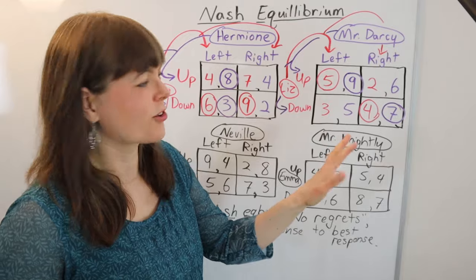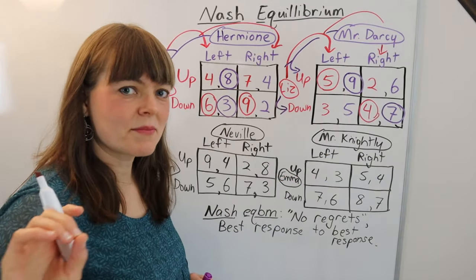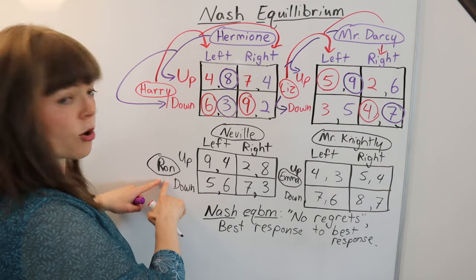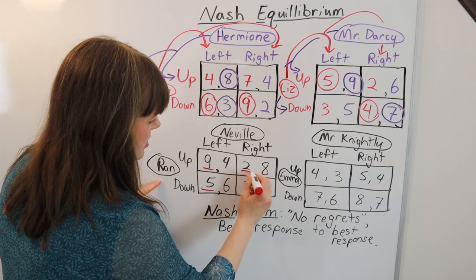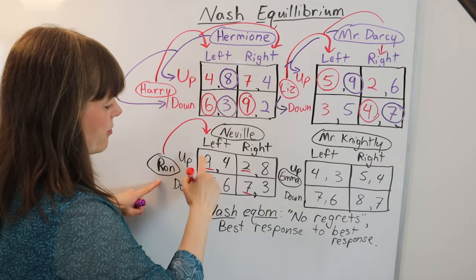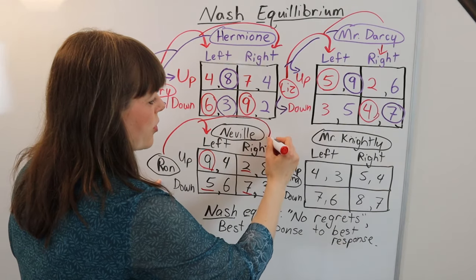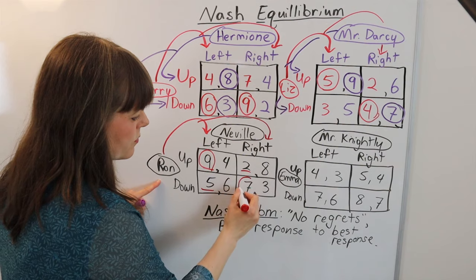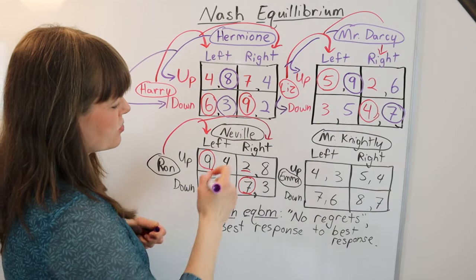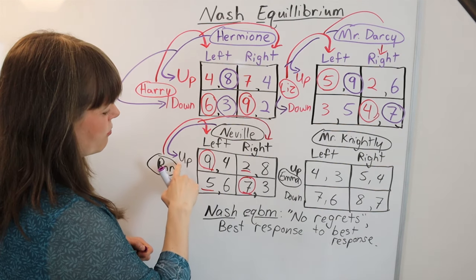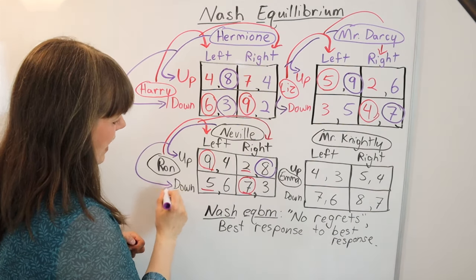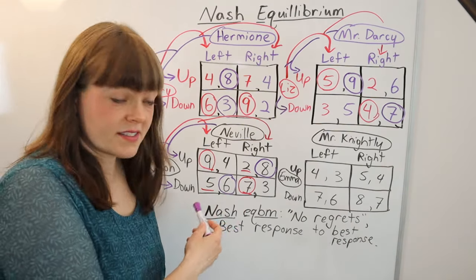What if your game is not nicely color-coded? In that case, I have a tip: sometimes I will underline the payoffs to begin with just to help organize my thoughts. Down here, Ron is player one, so I'm going to underline all of the player one payoffs, and Ron is going to check Neville's strategies. If Neville goes left, Ron would prefer the nine over the five. If Neville goes right, Ron would prefer the seven over the two. Then I flip perspectives, now looking at the non-underlined payoffs. As Neville, checking Ron's strategies: if Ron went up, Neville would prefer the eight over the four. If Ron went down, Neville would prefer the six over the three. So in this game, we have no Nash equilibrium.